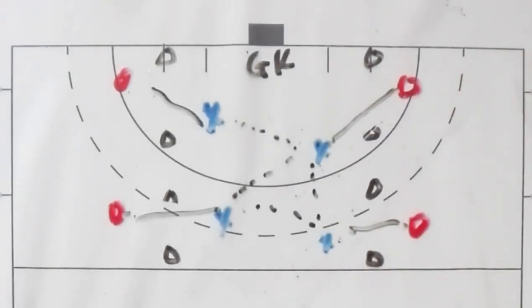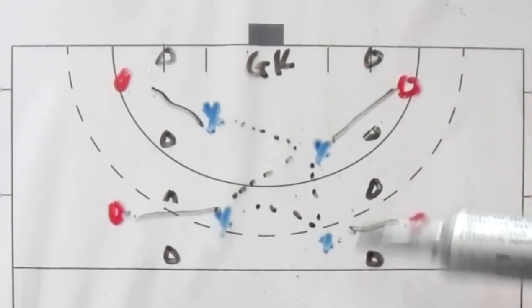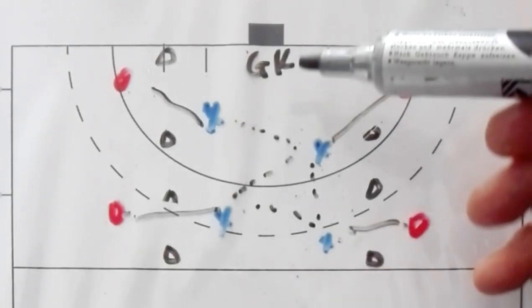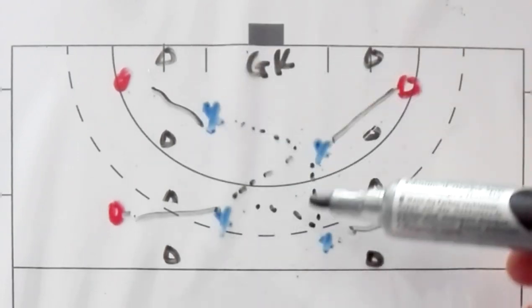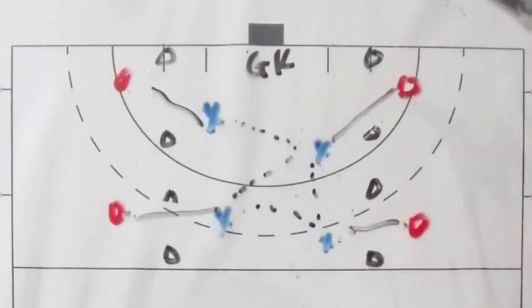You as a coach can put a little rule in: the attackers have 30 seconds or 45 seconds to get the ball and score. If they get it right, they get the goal. If they don't get it, the defending side will get the goal.